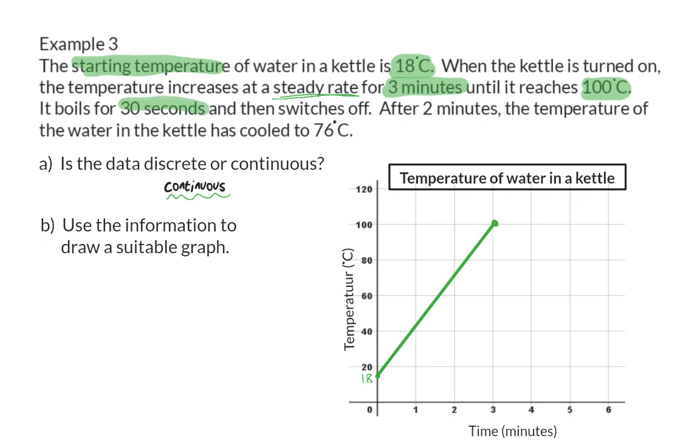Now, the water boils for 30 seconds and then switches off, so it stays constant at 100 degrees for another half a minute. Until 3 and a half minutes, it now stays at 100 degrees. Then, after 2 minutes, the water has cooled down to 76 degrees. So from 3 and a half minutes, 2 minutes later will be 5 and a half minutes, and then the water is at 76 degrees. Now, we just need to connect the last two points, and then the graph is complete.